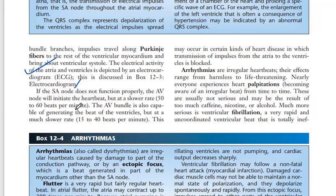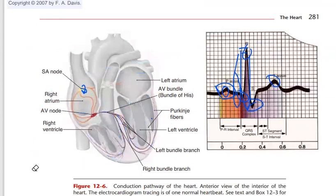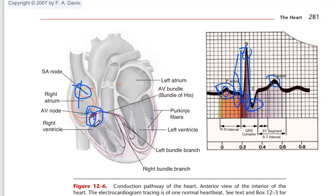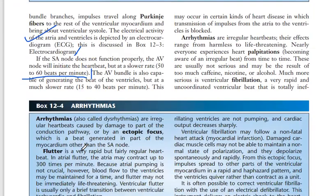The abnormalities that occur during this process are also recorded by the ECG. If the SA node does not function properly, the AV node will initiate the heartbeat, but at a slower rate of 50 to 60 beats per minute. The SA node has more capacity than the AV node to produce impulses — this is important to remember. If the SA node is not working for any reason, the AV node will start functioning by itself.